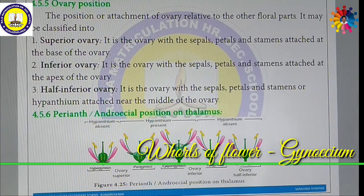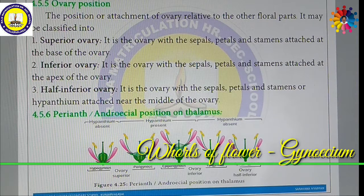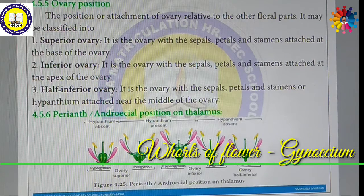Now we are going to see about ovary position. Depending upon the position of the ovary, these are divided into various categories: superior ovary, inferior ovary, and half-inferior ovary. Based on the attachment of the ovary relative to other floral parts, these are classified into three different categories — namely Superior, Inferior, and Half-inferior ovary.